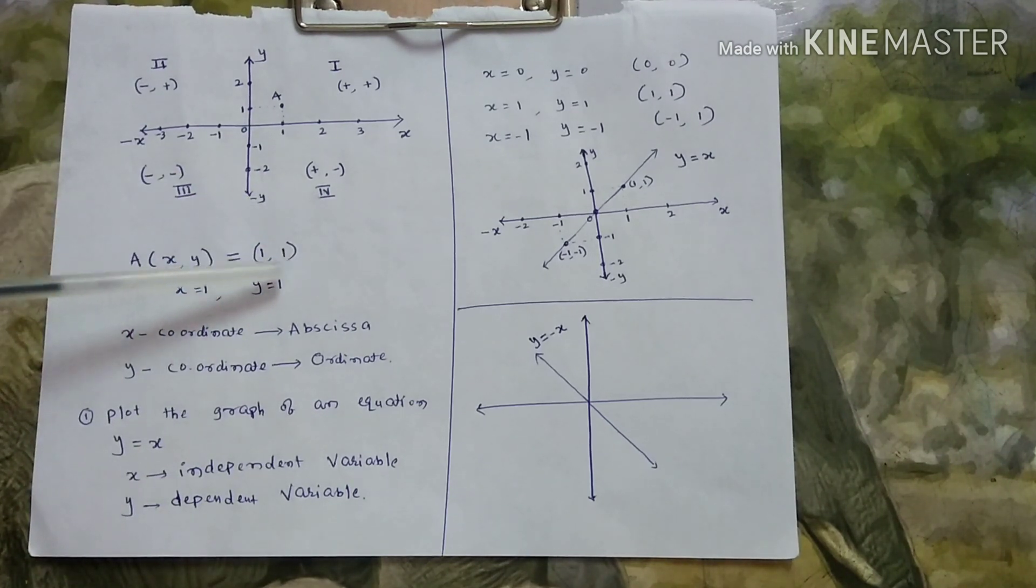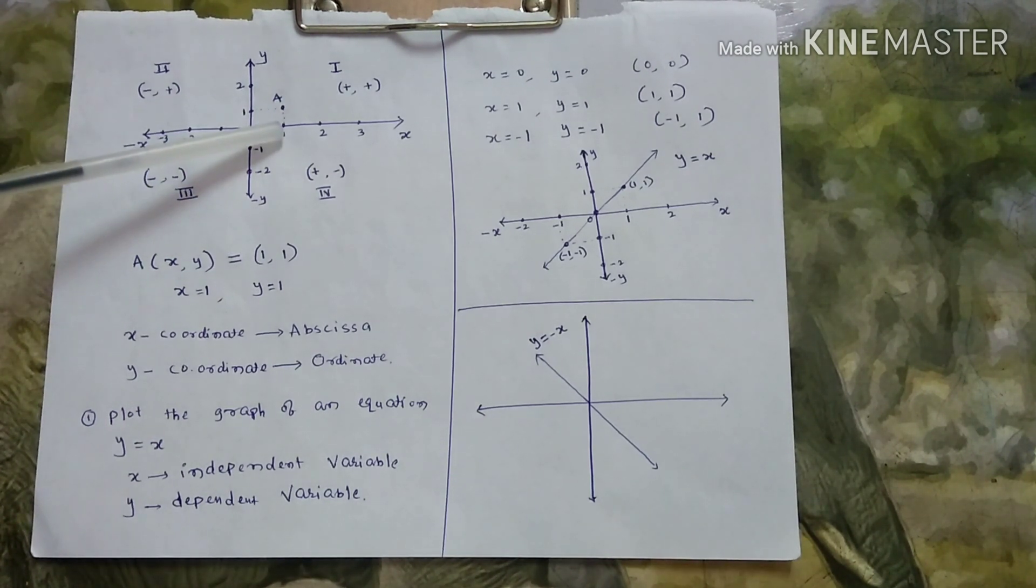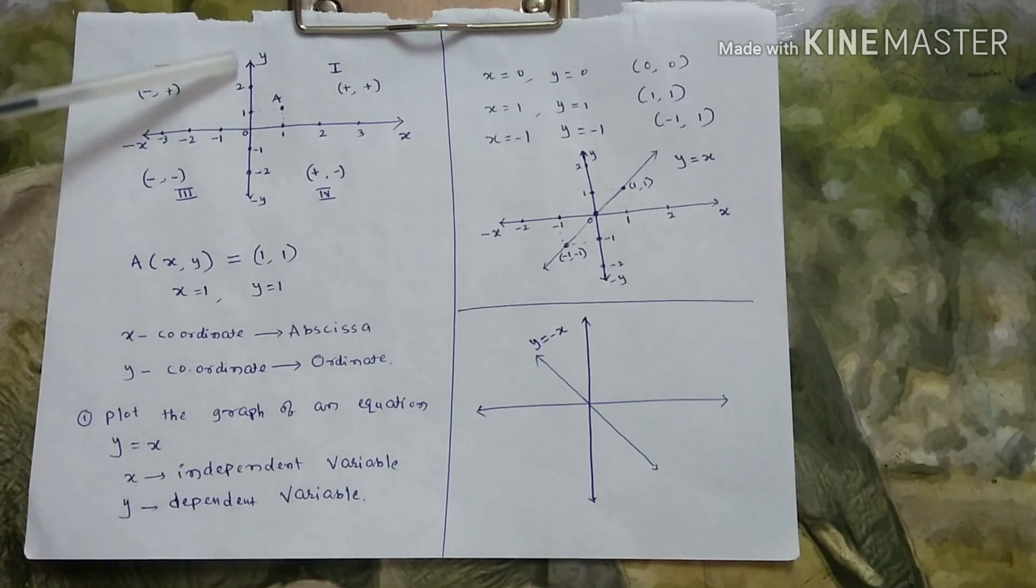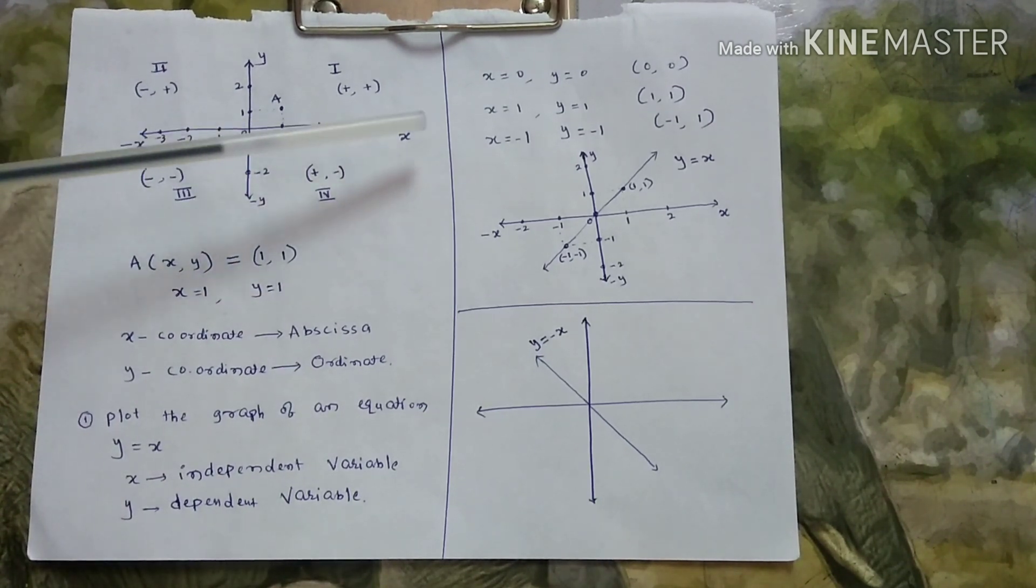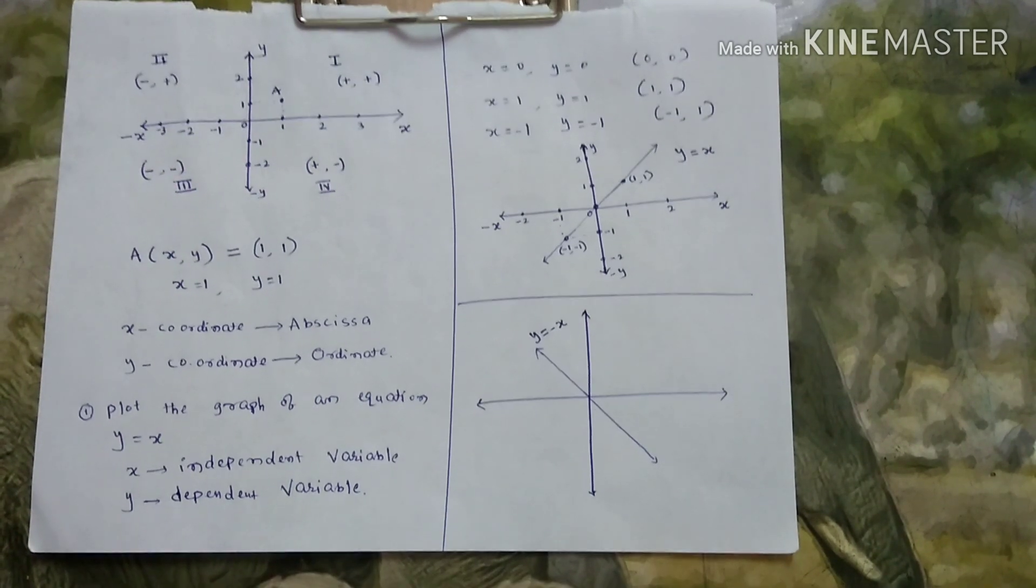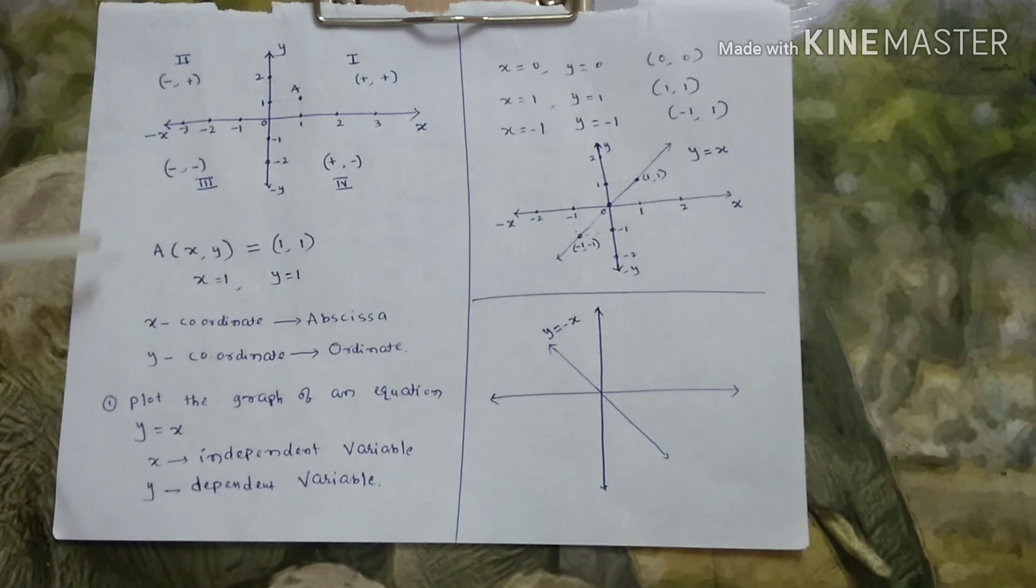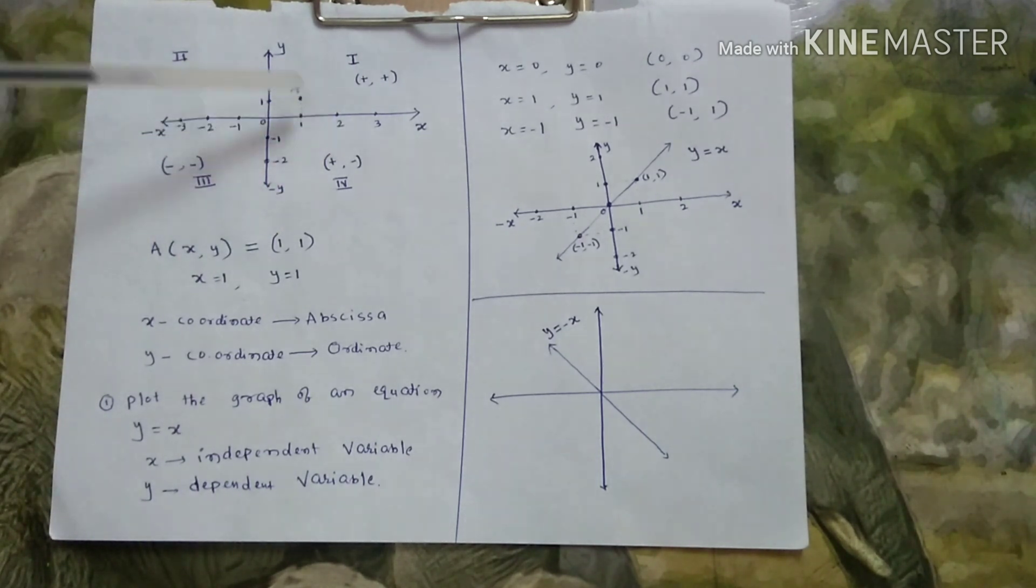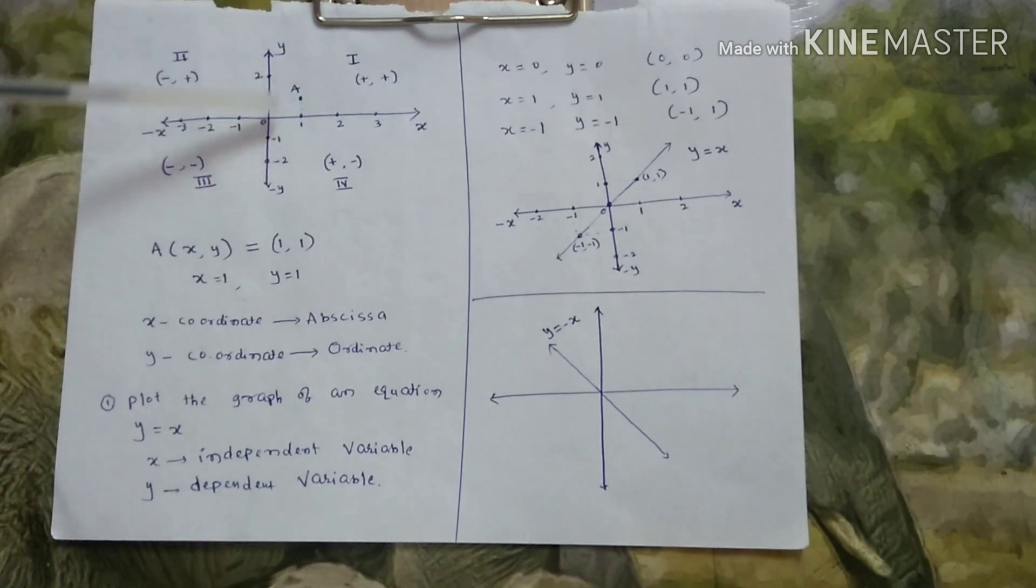Suppose, you take a point A. This is one. This is one. This point A has coordinates one comma one. So, x-coordinate is one. Y-coordinate is one. X-coordinate one means, x is equal to one means, this point is at a distance of one from the y-axis. Y-coordinate one means, this point is at a distance of one from x-axis.